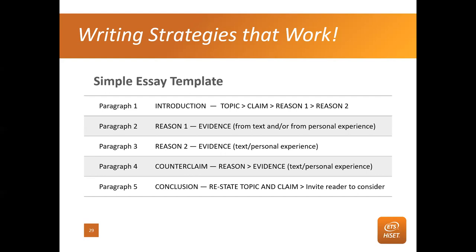We're coming to the end. This is the golden nugget — the template we've been talking about for the last 40 minutes. It lays it out simply. You're welcome to modify it. In your first paragraph introduction: what is the topic — the heading is right there — tell us the topic and make a claim, that's your position, and give two reasons. Second paragraph: take your first reason and give evidence from the text and personal experience. Third paragraph: take your second reason, again give evidence from the text and personal experience.